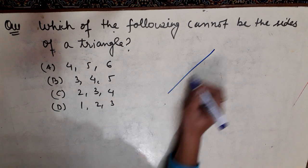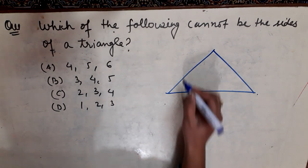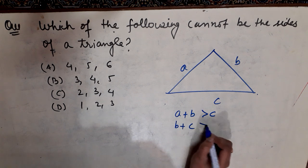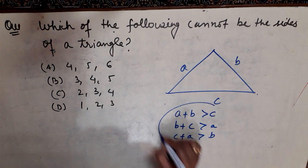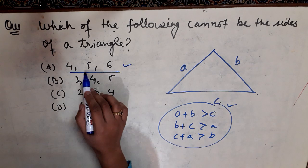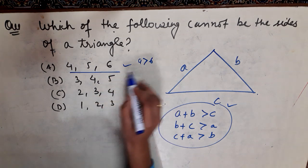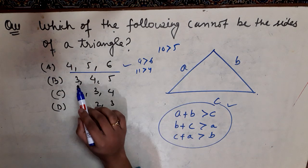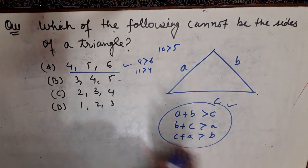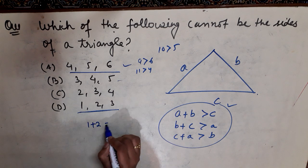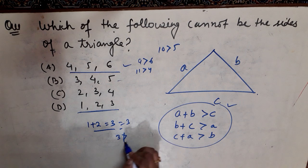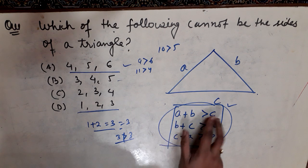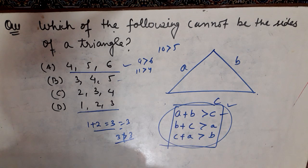The next question: which of the following cannot be the sides of a triangle? For a valid triangle, the sum of any two sides must always be greater than the third side — that is, b + c > a, and c + a > b. Checking: 4+5=9 > 6, 5+6=11 > 4, 6+4=10 > 5 — this is possible. For sides 1, 2, 3: 1+2=3, but 3 is not greater than 3, so this cannot form a triangle.